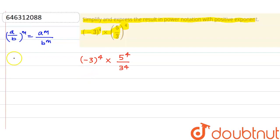Now see, I can write -3 as -1 × 3. So that is (-1)^4 × 3^4 × 5^4 / 3^4. This 3^4 and 3^4 will be cancelled out.